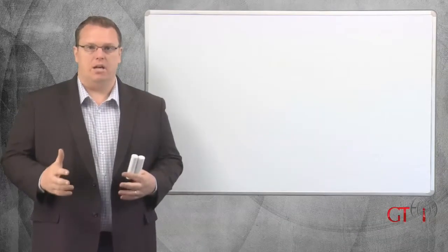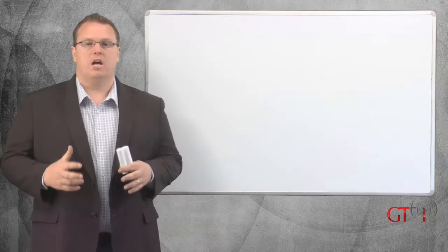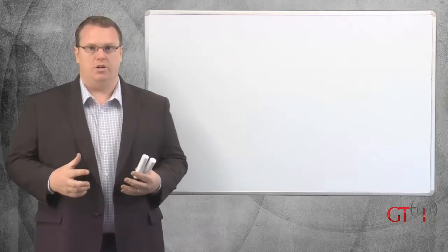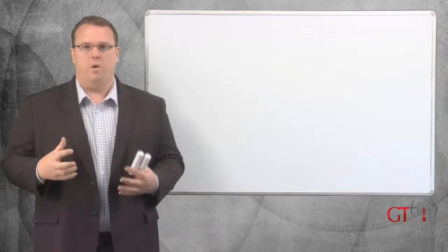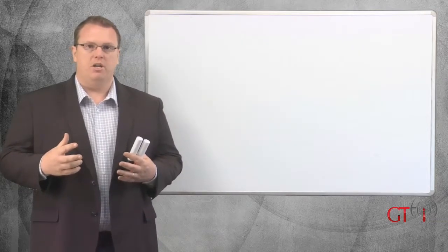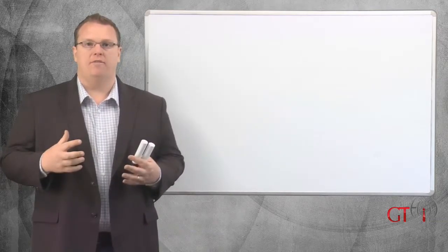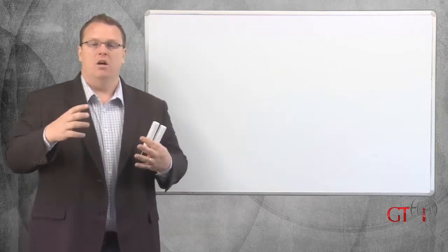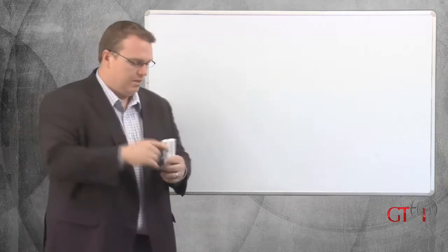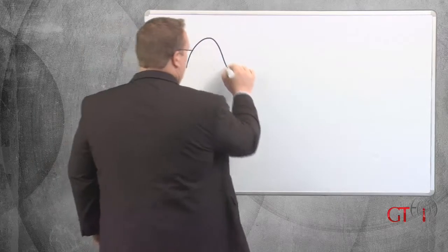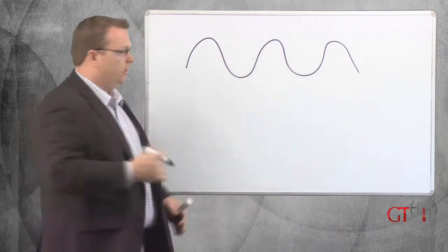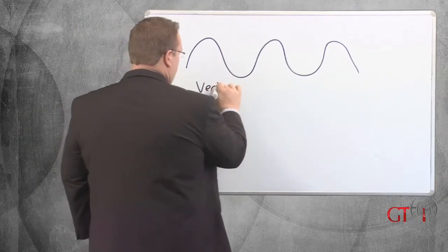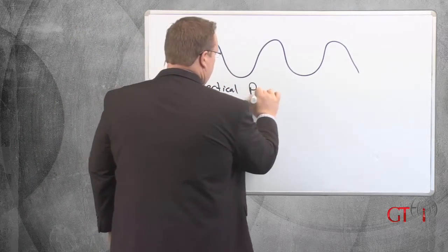Before we dive into antenna types, it's probably a good idea to talk about something called polarization. Polarization is the orientation of the wave. If you think about signals as they travel through the air, most people think of them like this, that the signals go up and down. And for the most part, that's true. This is called vertical polarization.